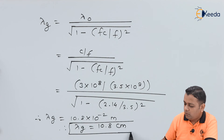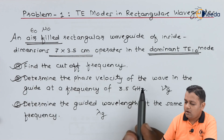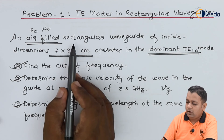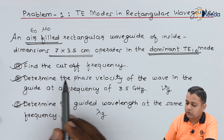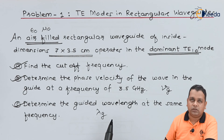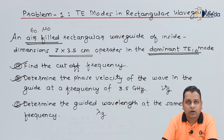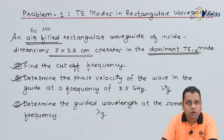For the given dimensions and operating mode of the rectangular waveguide, we have solved for: the cutoff frequency, the phase velocity, and the guided wavelength λg. In the next lecture, we shall practice one more problem based on the transverse electric mode of propagation in the rectangular waveguide. I hope you are enjoying learning with the Microwave Engineering subject. For more information and practice of these problems, you can subscribe to the Ekeda channel. Thank you.